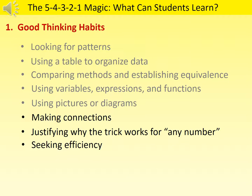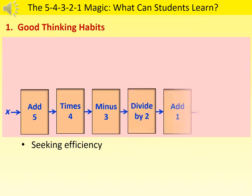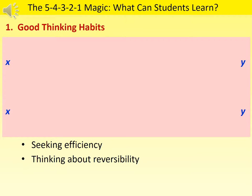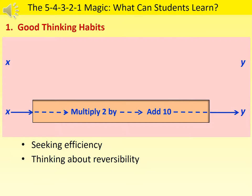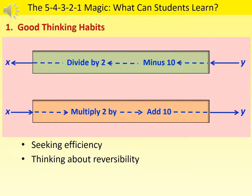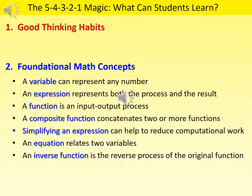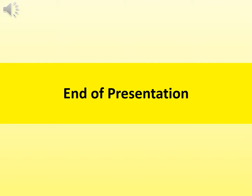In the 5-4-3-2-1 magic, students think of a secret number and arrive at the final answer. The intriguing part involves how we can spontaneously figure out the secret number from the final answer, requiring students to think in the opposite direction. Thinking about reversibility is an important mathematical habit of mind. The seeking efficiency habit reduces 6 steps into 2, and the reversibility habit yields the inverse function, minus 10 divided by 2. In conclusion, this activity fosters these mathematical habits of mind and foundational concepts in algebra. May your students enjoy this 5-4-3-2-1 magic activity, improve their thinking habits, and deepen their mathematical understanding.